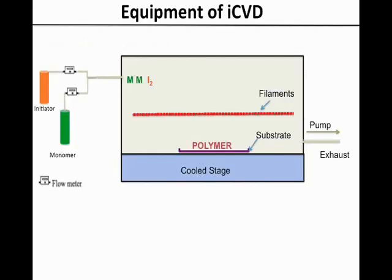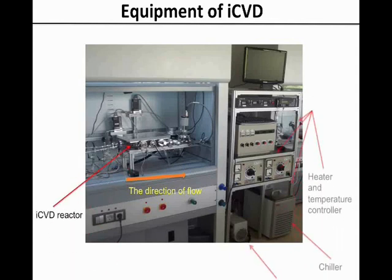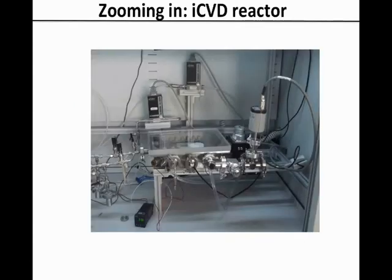The required equipment for iCVD consists of a precursor vaporisation and delivery system, a vacuum chamber, a vacuum pump, and control hardware. This is a laboratory scale iCVD system. The reactor is placed in a fume hood and the control hardware is located next to the fume hood. Now let's look at the reactor part.